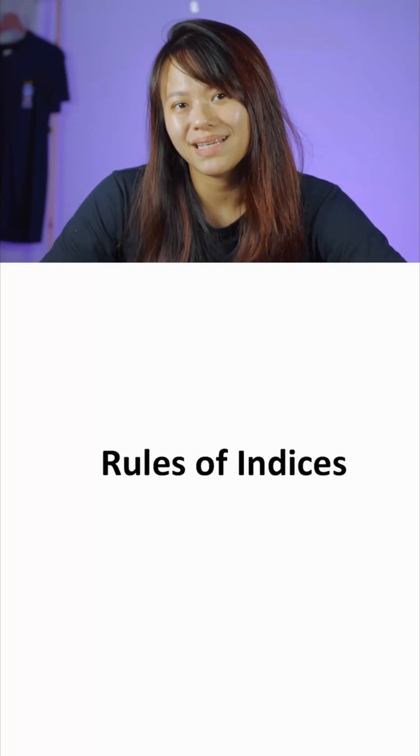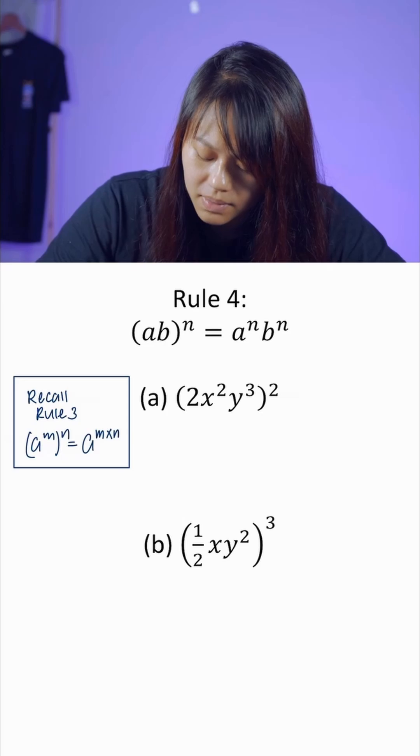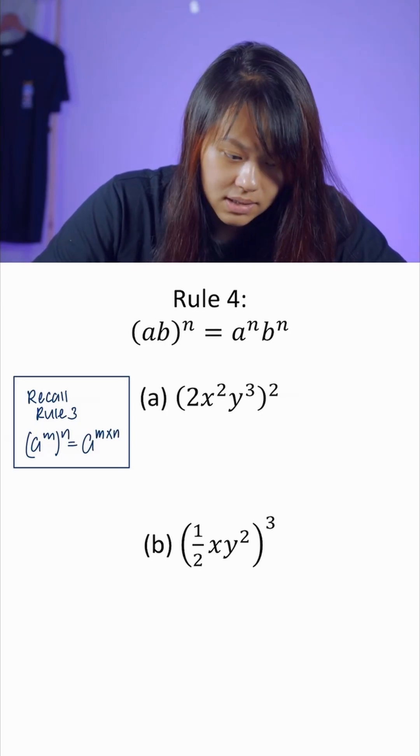Today we'll be going through rules of indices 2. Let's look at rule number 4. We have (ab)^n. What does this mean?